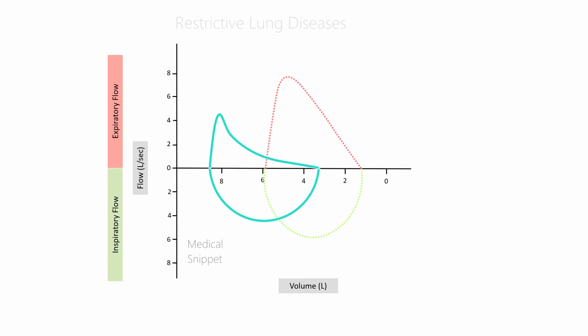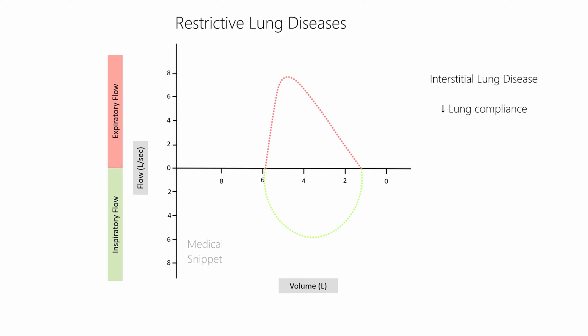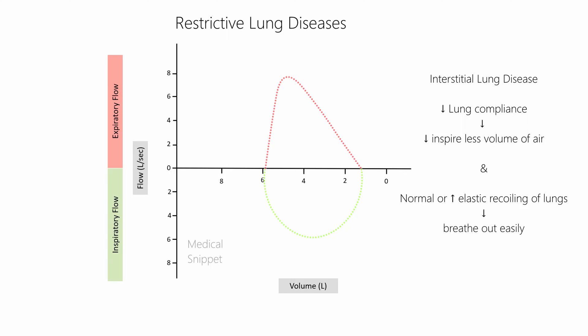In restrictive lung diseases like interstitial lung disease, there is decreased compliance of the lungs, but elastic recoil is normal or increased, so patients can easily breathe out. Since patients can breathe in only a reduced volume of air, the inspiratory curve is normal in contour but reduced in size. The expiratory curve is taller with a steep descending limb due to increased elastic recoil, but overall smaller than normal due to decreased inspired air.